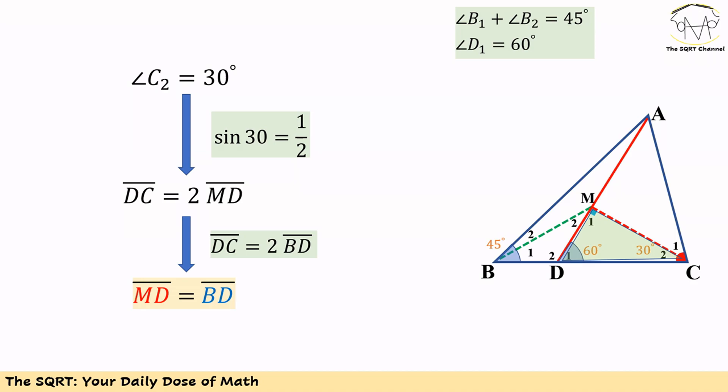And we can write DC is twice MD. Remember, DC was twice BD as well, so MD and BD are going to be equal.